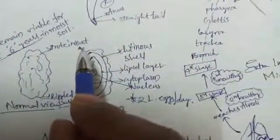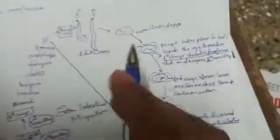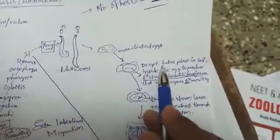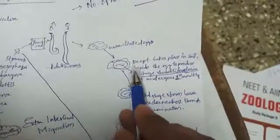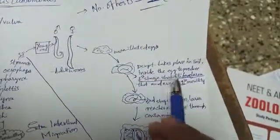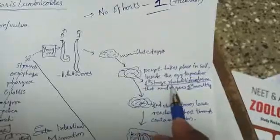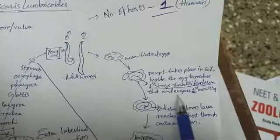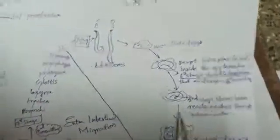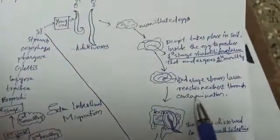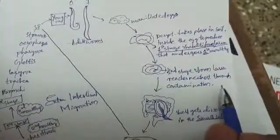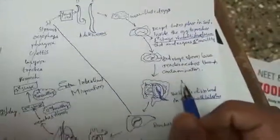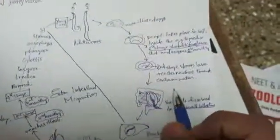The development of the egg takes place in soil inside the egg to produce first stage rhabditiform larva that undergoes first molting and then second stage rhabditiform larva.